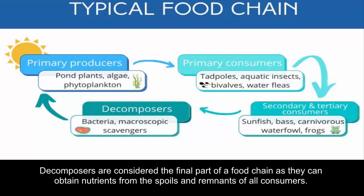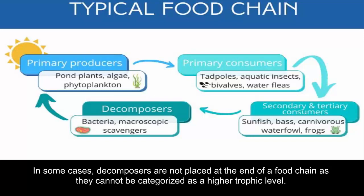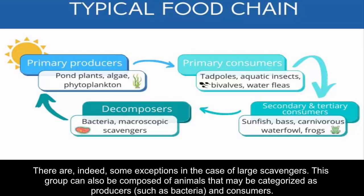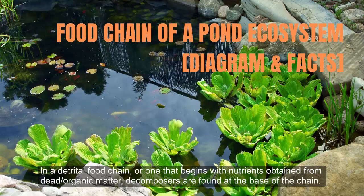Decomposers are considered the final part of a food chain as they can obtain nutrients from the spoils and remnants of all consumers. The linear flow of energy ends with them as they break down organic materials to free up nutrients once more. In some cases, decomposers are not placed at the end of a food chain as they cannot be categorized as a higher trophic level. There are indeed some exceptions in the case of large scavengers. In a detrital food chain — one that begins with nutrients obtained from dead organic matter — decomposers are found at the base of the chain.